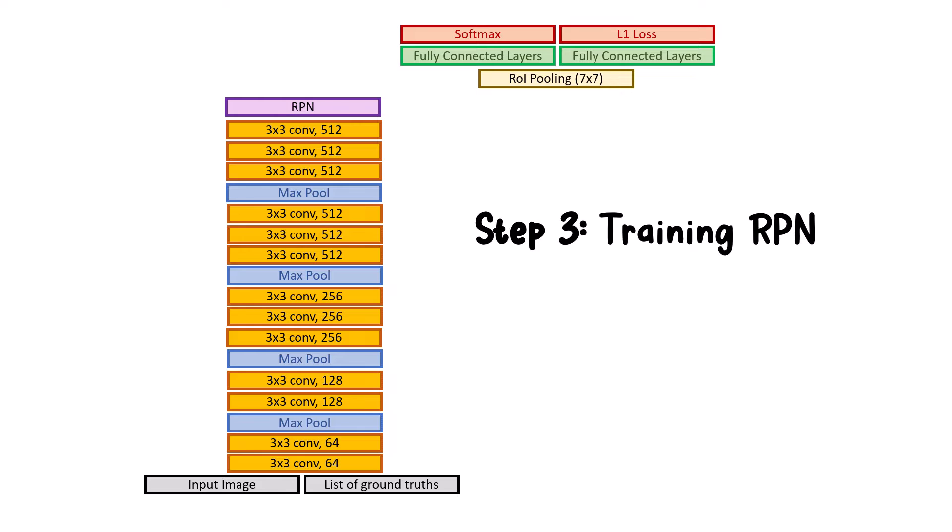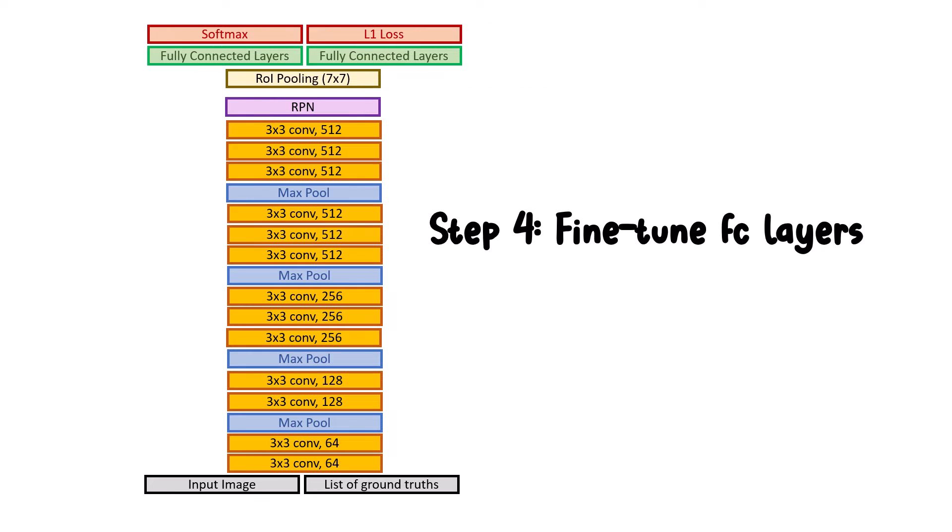Something that we also do in transfer learning, so it wouldn't be any problem. For the final step, we just need to freeze the backbone and RPN module and only train the fully connected layers. And yeah, that was all the things you needed to know from Faster R-CNN. If you found this video useful, don't forget to like and subscribe.